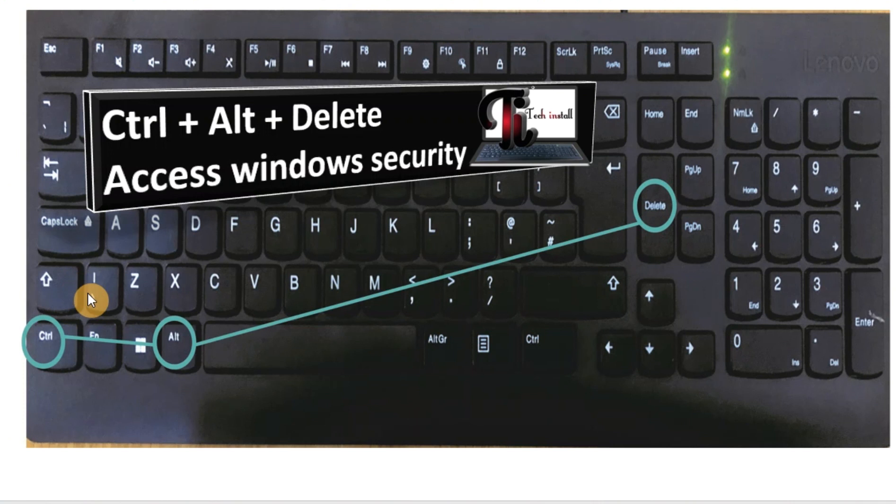To access Windows Security, press your Control key, then press Alt, then press Delete. That will open Windows Security, where you can lock, switch user, sign out, change your password, and access the Task Manager.